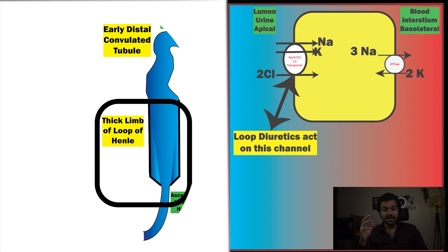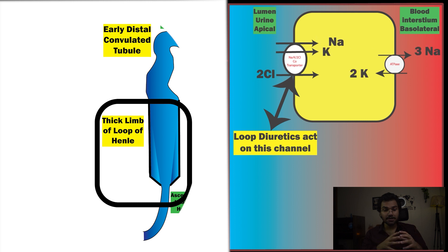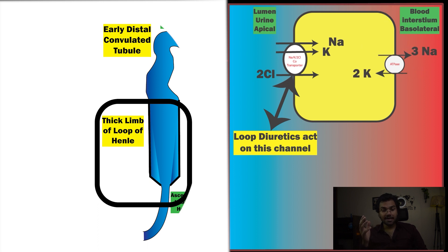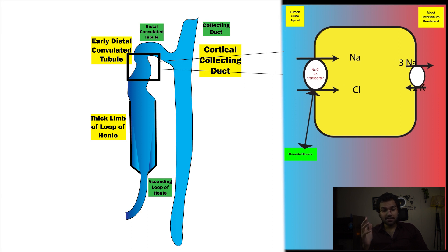In the thick ascending limb of the loop of Henle, we have the NaK2Cl transporter at the apical or luminal side, which moves 1 sodium, 1 potassium, and 2 chloride ions from the lumen into the blood. Loop diuretics inhibit this channel. At the basolateral side, we have the Na/K-ATPase channel which moves 3 sodium toward the blood in exchange for 2 potassium toward the urine side.